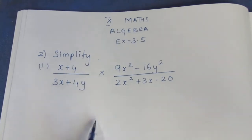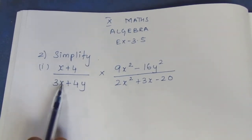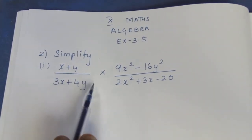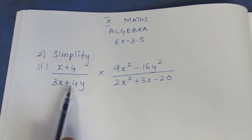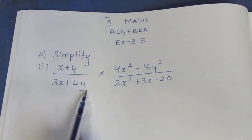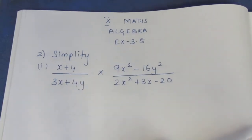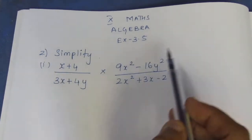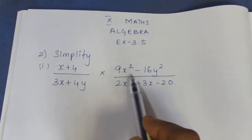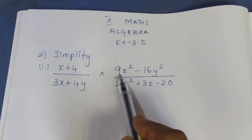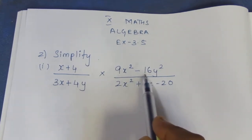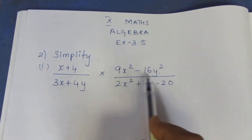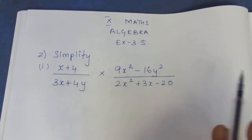In this case, you can cancel the numerator and denominator. We need to factorize the denominator. How do you factorize? Now, 9x square minus 16y square — 9 is a square number, that is 3 square, and 16 is a square number. So x square and y square follow the difference of squares formula.